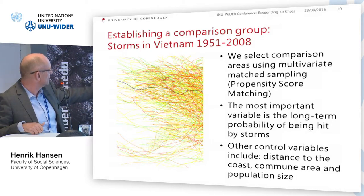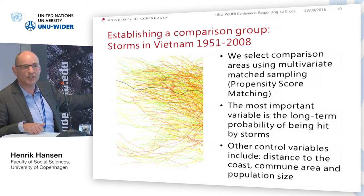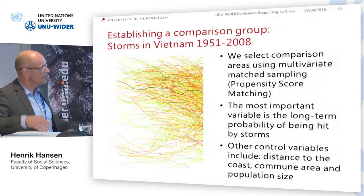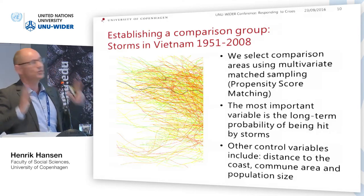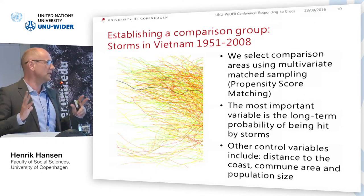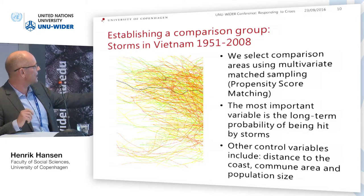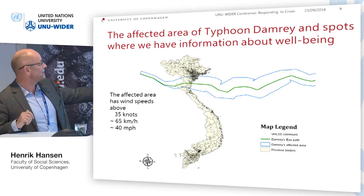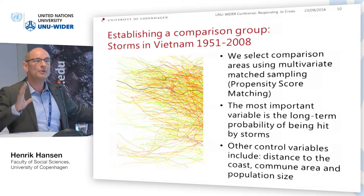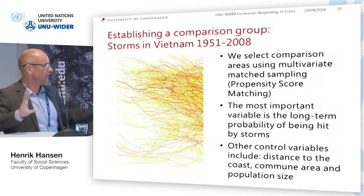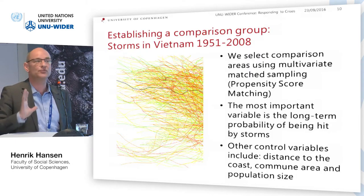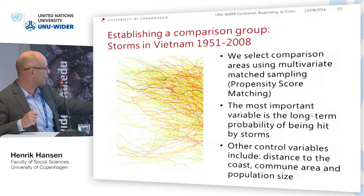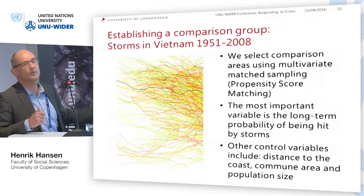For all of these historical storms we have a storm area, which lets us compare storm exposure across communes. We match based on each commune's propensity — the probability of being affected by a storm — because there are far fewer storms in southern Vietnam and many more in the north. We also account for distance to the coast, since wind speed drops as you move inland and mudslide risk changes too. Commune area and population size are additional matching variables.